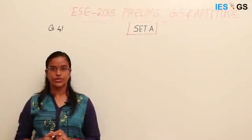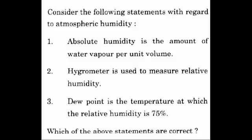Question 41: Consider the following statements with regard to atmospheric humidity. First, absolute humidity is the amount of water vapor per unit volume. Second, hygrometer is used to measure relative humidity. Third, dew point is the temperature at which relative humidity is 75%.